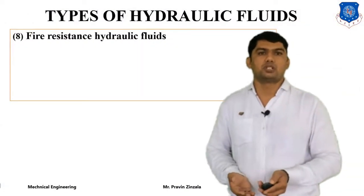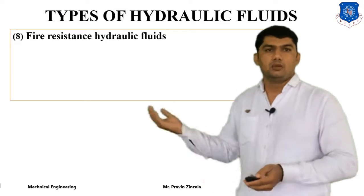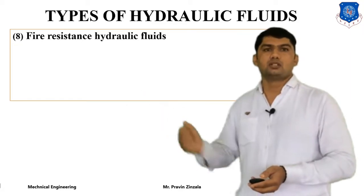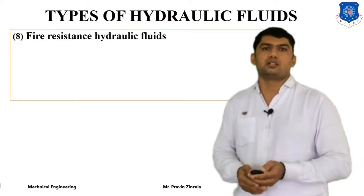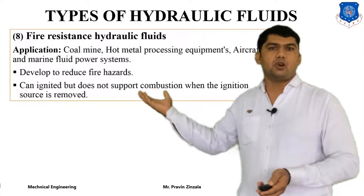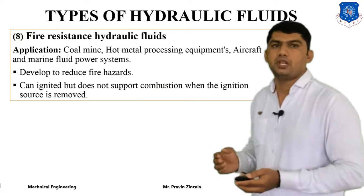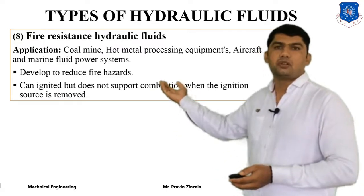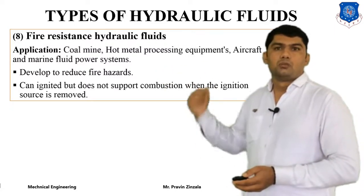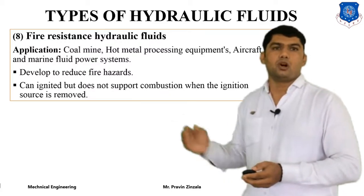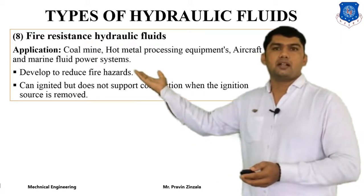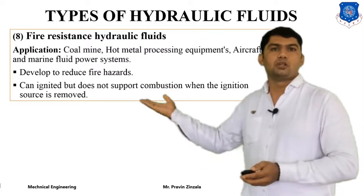In the previous lecture, we discussed different types of hydraulic fluid such as mineral oil, water, biodegradable and vegetable oils. The next hydraulic fluid is fire resistance hydraulic fluid. Hydraulic systems operate at different locations and applications — coal mines, hot metal processing equipment, aircraft, marine fluid power systems, and mining industry — where the system must operate at higher temperatures, so fire resistance hydraulic fluid is used to reduce fire hazard.